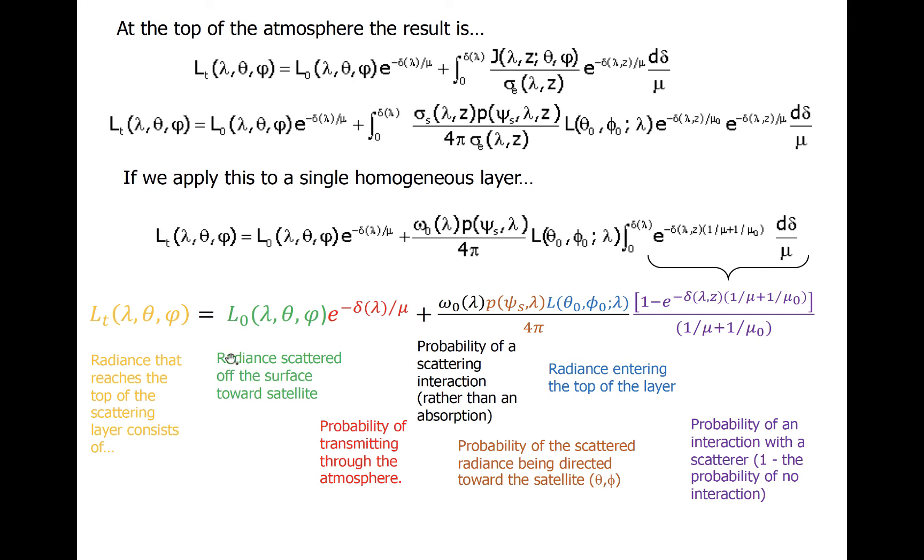It says that top of atmosphere radiance is equal to radiance scattered off the surface toward the satellite, reduced by the direct transmittance of the entire atmosphere along a slant path, plus any additional radiation scattered by the atmosphere into the direction of the satellite. Note that we have replaced sigma s over sigma e with omega naught, the single scattering albedo, and that two exponential decay terms appear in purple, one for radiation on the way down and another for radiation on the way up.